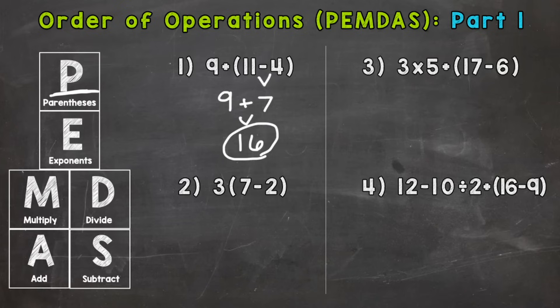Number two we have a three right next to a parenthesis and then seven minus two within those parentheses. So anytime you have a number right next to the parentheses that means multiply. So I'm going to rewrite the problem with the multiplication sign in there. So again anytime you see a number right next to parentheses it is multiplication.